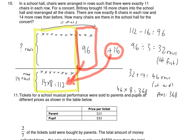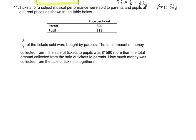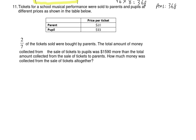Let's go through question 11. Tickets for a school musical performance were sold to parents and pupils at different prices. Parents pay more than students — adult versus child. 2 over 7 of the tickets sold were bought by parents. What fraction were bought by pupils? 5 over 7. So for every 2 tickets parents buy, pupils buy 5 tickets. The ratio is 2 to 5.